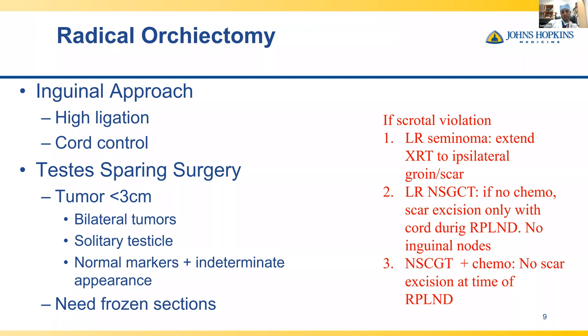For the surgical approach to radical orchiectomy, this is a high ligation where you want cord control. Indications for testis-sparing surgery are well-defined: tumors must be less than three centimeters, typically for men with bilateral tumors, bilateral testicular masses, a solitary testicle, or patients with normal tumor markers but an indeterminate appearance on scrotal ultrasound or MRI. It's imperative to perform frozen sections at the time of orchiectomy to ensure complete resection of a suspicious lesion.